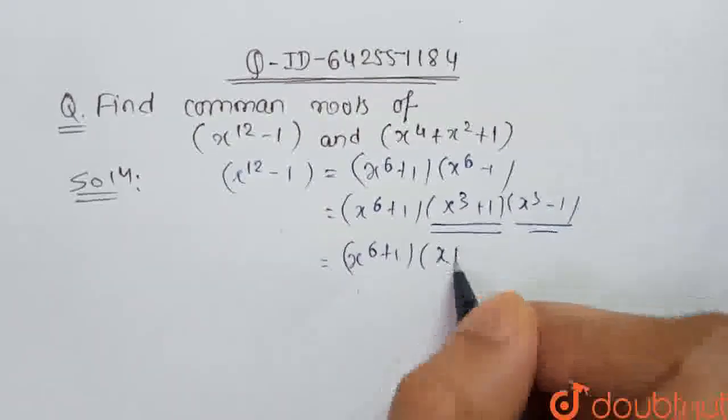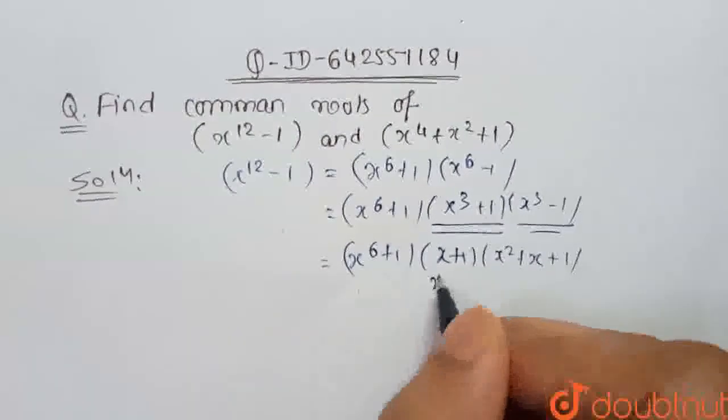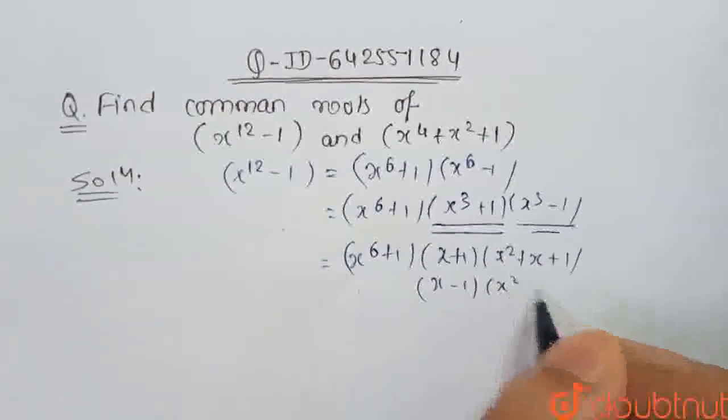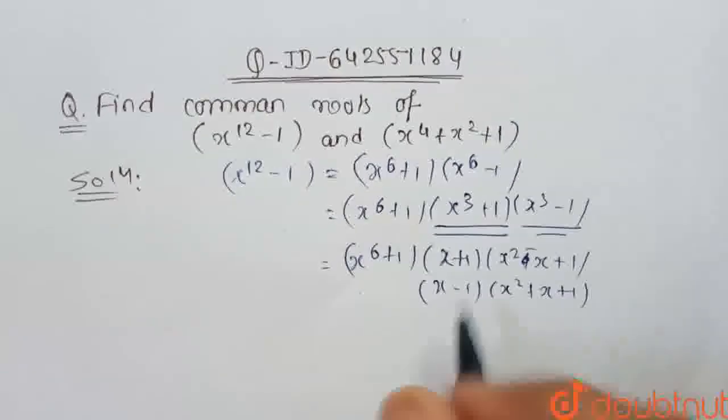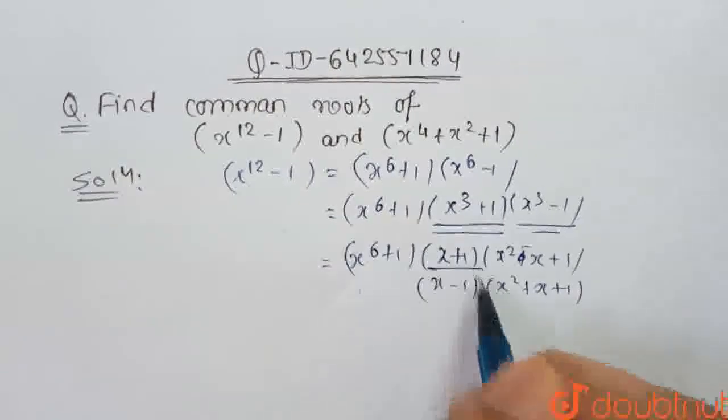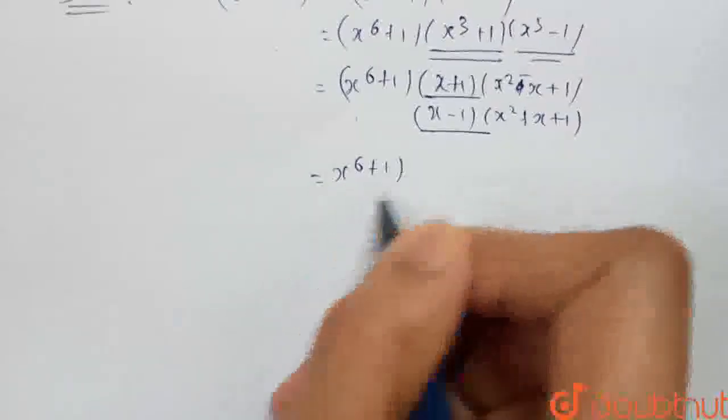Here it will be (x + 1)(x^2 + x + 1)(x - 1)(x^2 - x + 1). So here x + 1 and x - 1 gets changed into x^6 plus 1.